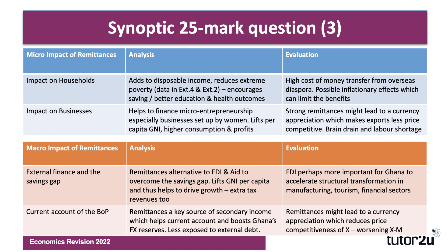An evaluation point is that, although remittances are strong, they are not necessarily the catalyst for economic transformation. In many ways, they reinforce existing patterns of employment and spending. If you're looking for structural change in the Ghanaian economy — for example, moving away from primary product dependence on oil, cocoa, and precious metals — then FDI is more important than remittances, particularly if you want to develop manufacturing, tourism, and financial sectors.